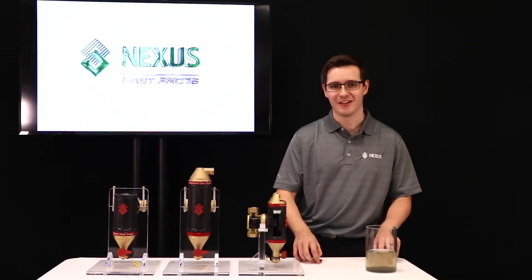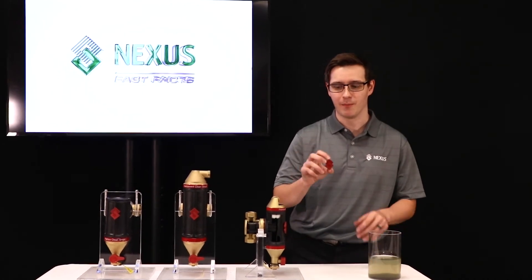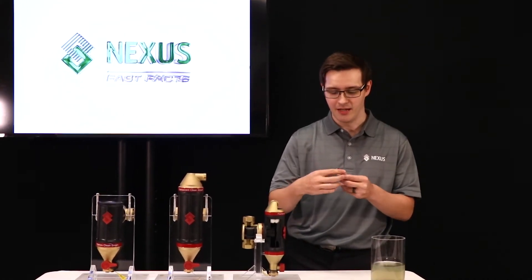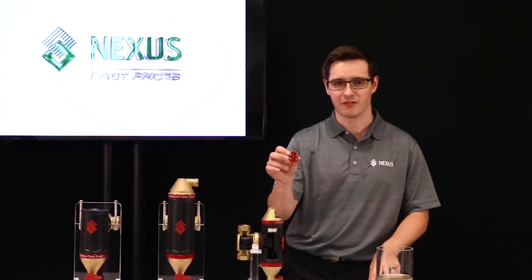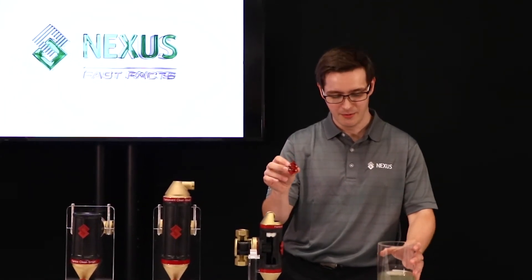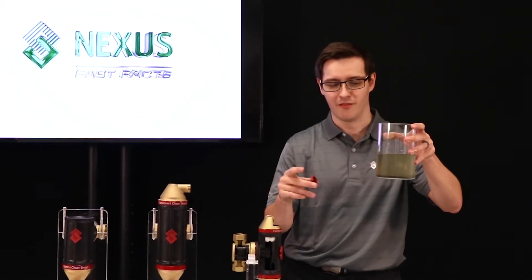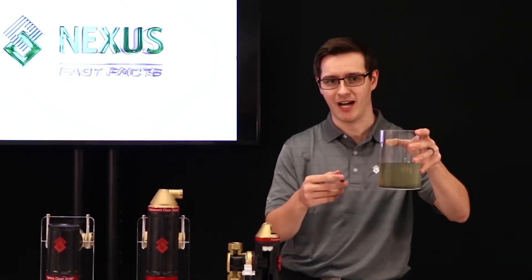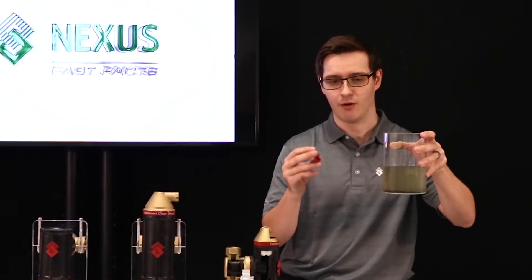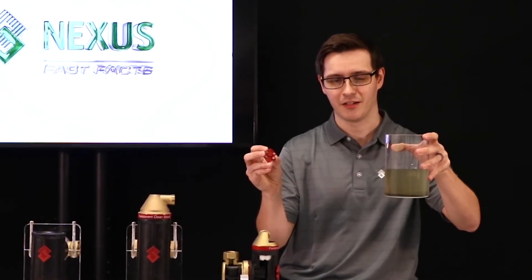We get a lot of questions here at Nexus about our neodymium magnets that we put into the Clean Smart. And how four little magnets can really make an impact at removing magnetite from a system. So luckily today, we have our glass of water with our iron filings. What we're going to do is run the magnet up the side of the glass and demonstrate how four little neodymium magnets can make a real impact.